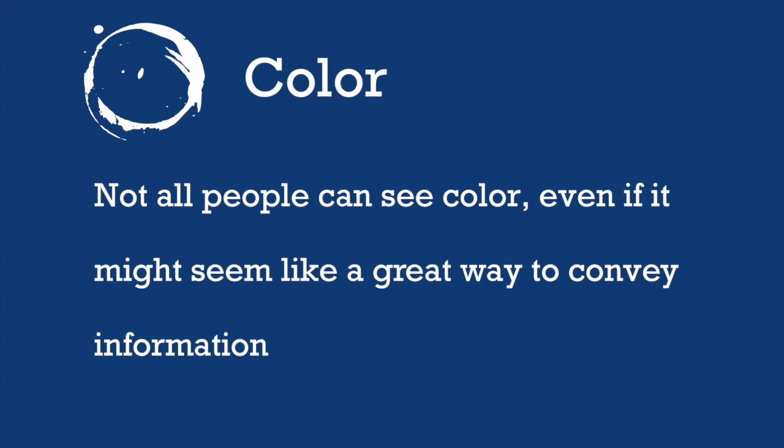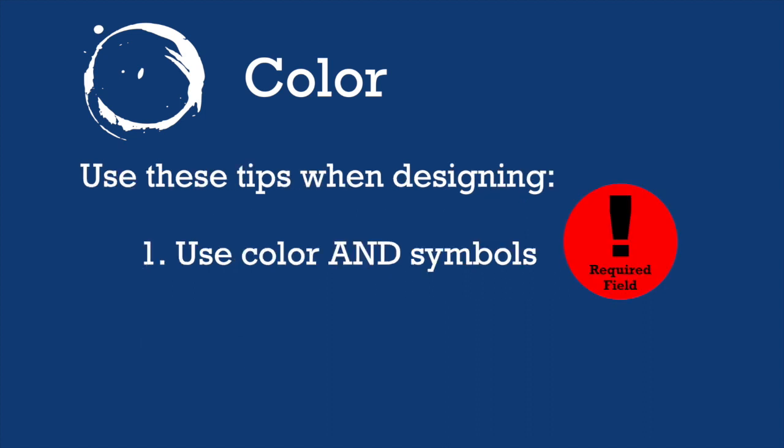The second element we will discuss is color. Not all people can see color, even if it might seem like a great way to convey information. You can use the following tips to help you design with the needs of all people in mind. The first tip is to use color and symbols when designing your web page. If there's something important, don't rely on just color to tell somebody that it's there — include a symbol for people who may not see that color the way others do.